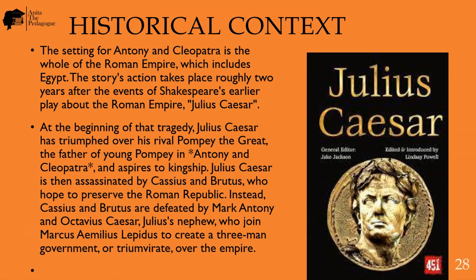At the beginning of that tragedy, Julius Caesar has triumphed over his rival Pompey the Great — the father of young Pompey in Antony and Cleopatra — and aspires to kingship. Julius Caesar is then assassinated by Cassius and Brutus, who hope to preserve the Roman Republic.